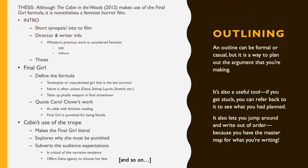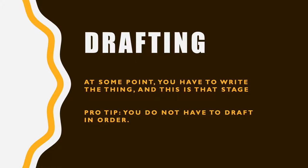Moving on, the next step after outlining and organizing is drafting, because at some point you have to sit down and write the thing. Again, pro tip: you do not have to draft in order. This is where the outline becomes really helpful — you can go back to your outline if you're having trouble in a section, jump ahead to another section that's clearer in your plan, and come back to the harder section later. The point of drafting is to start getting ideas out on paper. The first draft is what's called the shitty first draft, a term coined by Anne Lamott in her nonfiction work Bird by Bird.